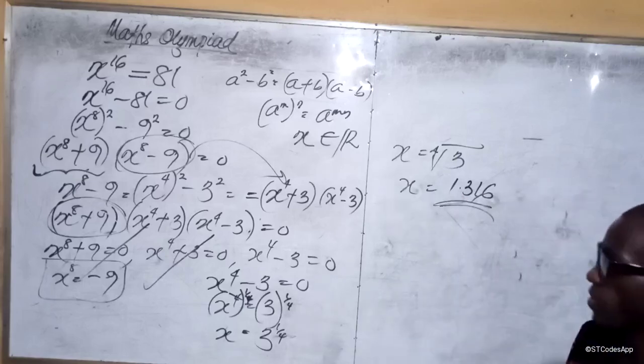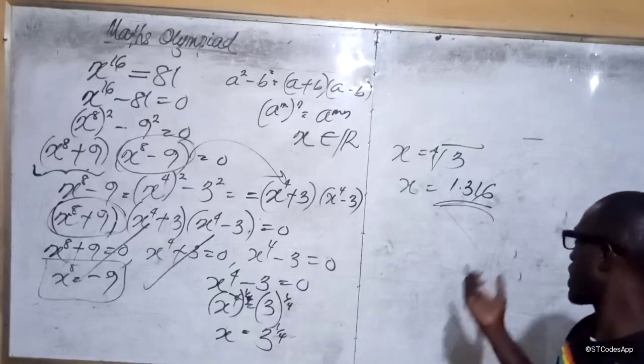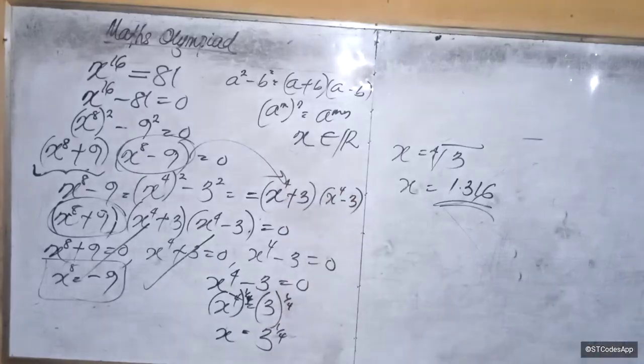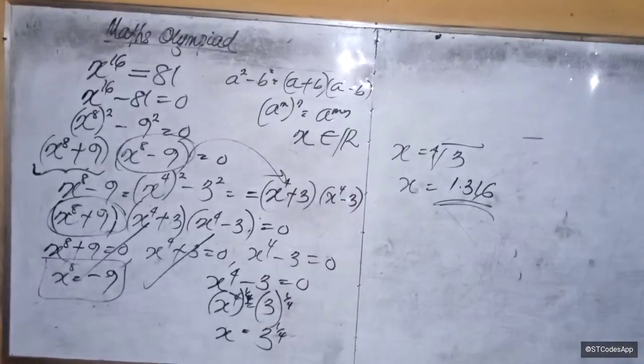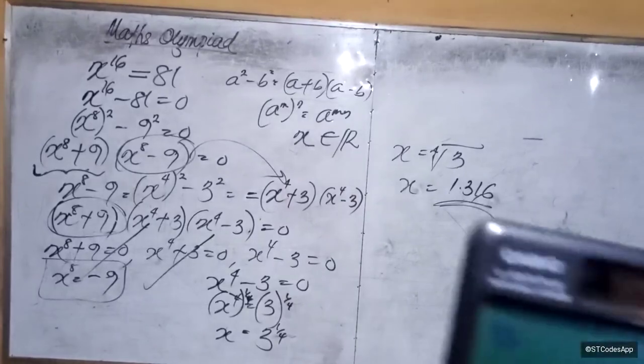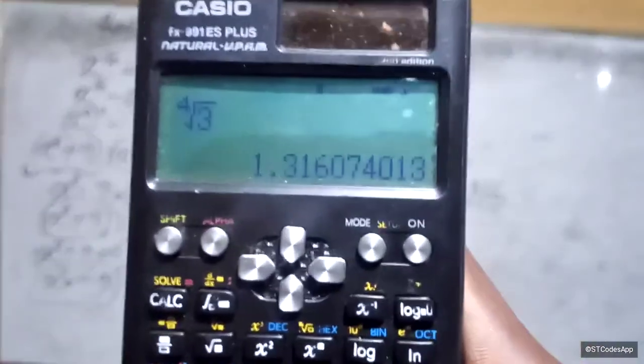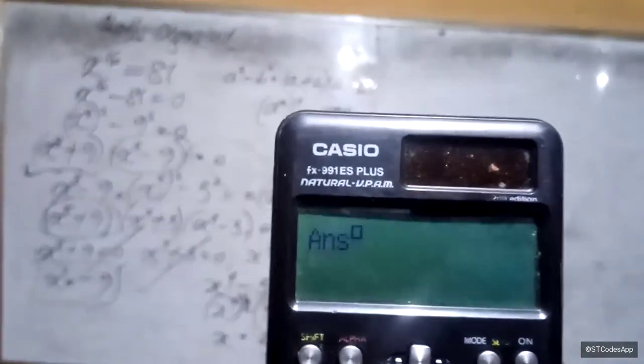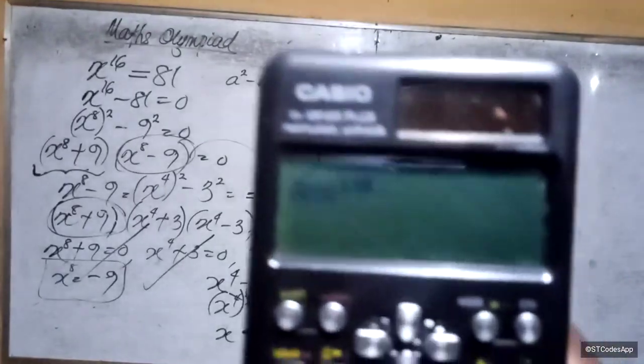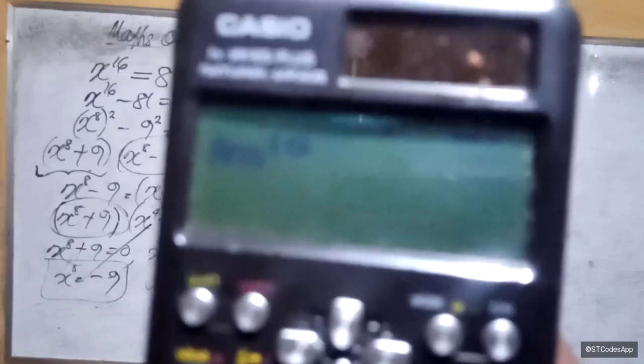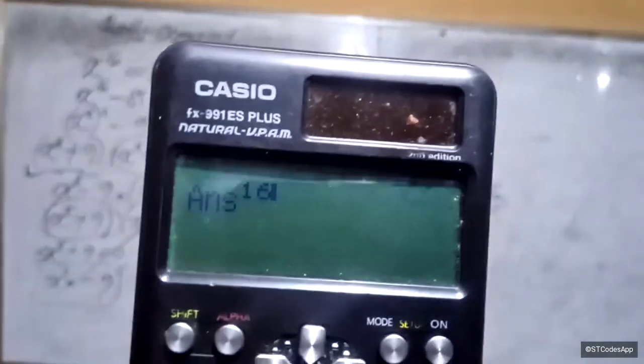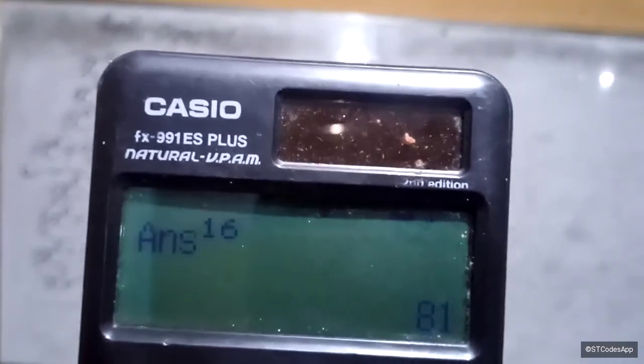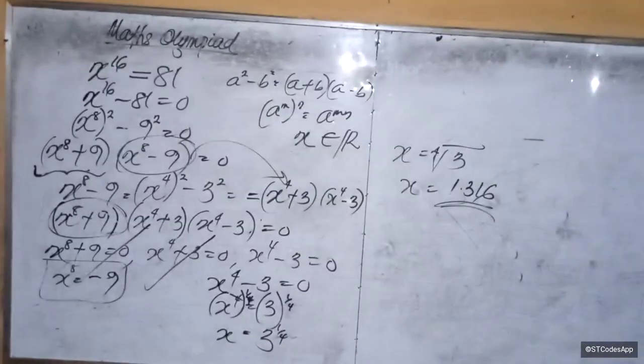That becomes 1.316. That becomes our approximate answer. We can try that. If we raise 1.316 to the power of 16, let's see if we get 81. 1.316 raised to the power of 16 is equal to 81.